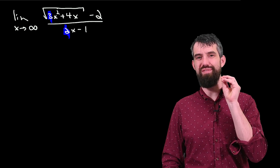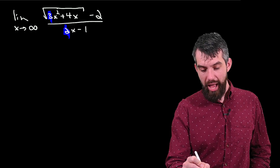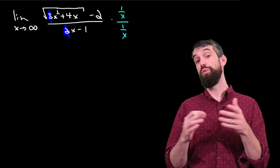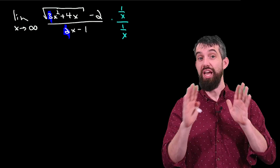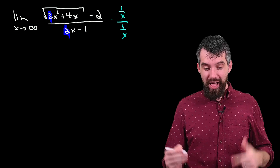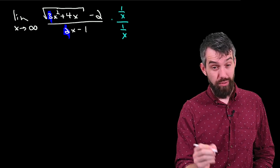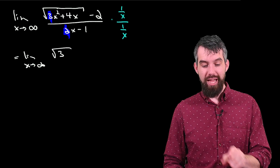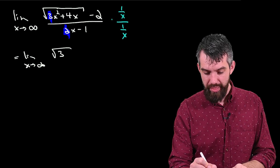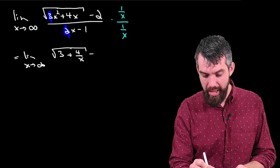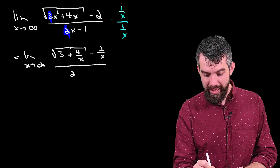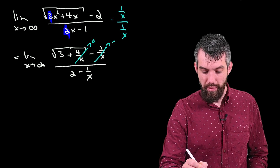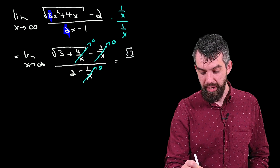I want to justify that answer more rigorously. The trick is to multiply top and bottom by 1/x. Factoring 1/x through, I get: on top, square root of 3 plus 4/x minus 2/x (noting 1/x inside a square root becomes 1/x squared); on the bottom, 2 minus 1/x. In the limit as x goes to infinity, the 1/x and 1/x² terms all go to 0. Final answer: square root of 3 divided by 2.